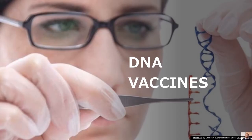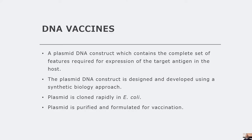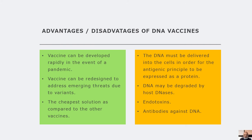DNA vaccines are another promising type of vaccine. They are produced by engineering a plasmid which contains the complete set of features required for expression of the target antigen in the host. The plasmid DNA construct is designed and developed using a synthetic biology approach. The plasmid is cloned into E. coli, then purified and formulated for vaccination. The advantages include rapid production and low cost because plasmids can be cloned rapidly in E. coli. The disadvantage is that the DNA vaccine must be delivered into the cells and eventually into the nucleus for translation of the target proteins, and the antigen should also be displayed on the surface of the host. DNA can be degraded by host DNases, endotoxins may be carried over from the production process, and in some cases the host may produce antibodies against the plasmid DNA itself.